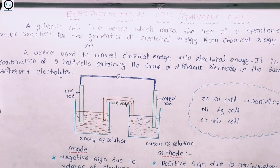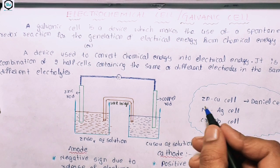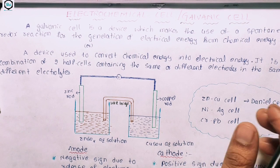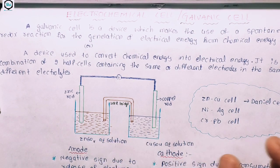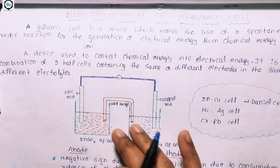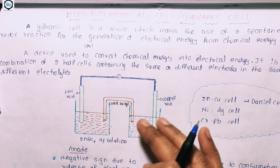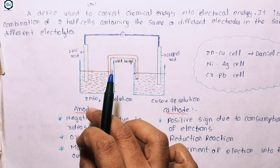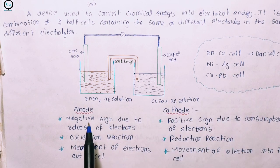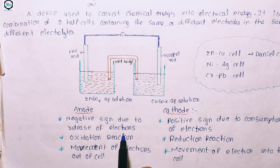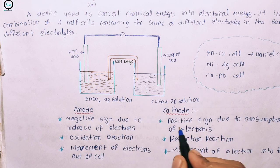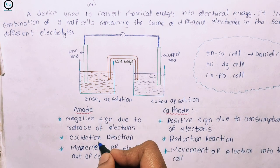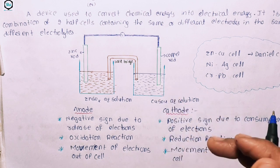In every book we find the zinc-copper cell, that is the Daniel cell. The zinc-copper cell works as an electrochemical cell. Here the anode has a negative sign due to the release of electrons, and the cathode has a positive sign due to the consumption of electrons. Oxidation reaction occurs at the anode and reduction reaction at the cathode.